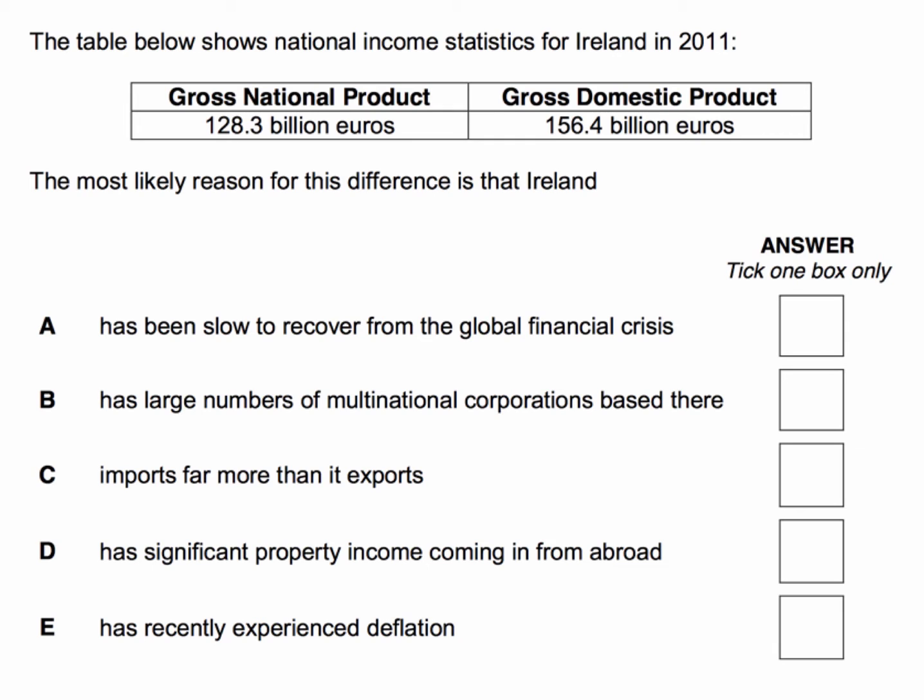Let's keep in mind that GDP, of course, is the value of output of goods and services produced within the geographical boundaries of a country. So a foreign company, for example, producing in Ireland would be adding to GDP in Ireland.